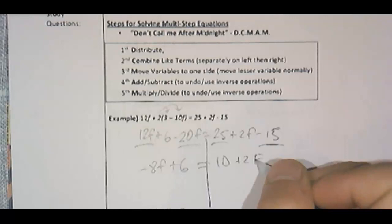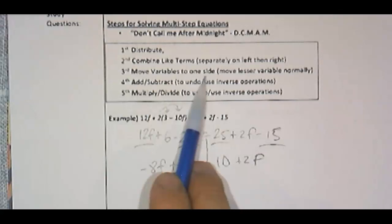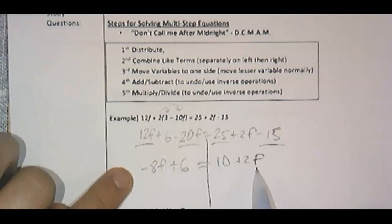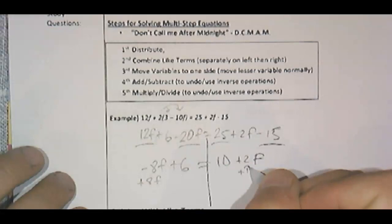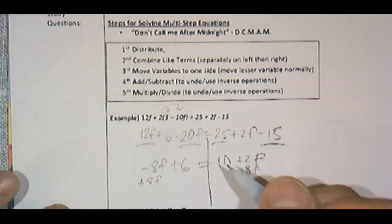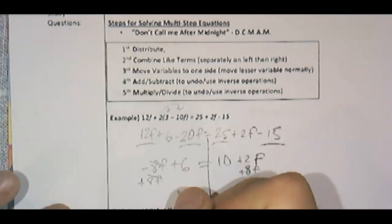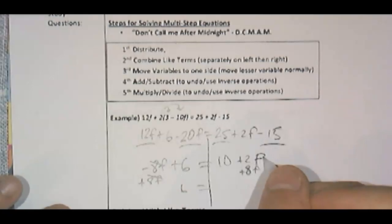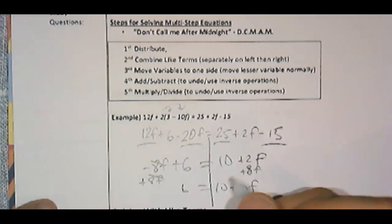And then the next step says, third step, move the variables to one side. Normally move the lesser variables. So negative 8f and 2f. Negative 8 is less than 2. So I'm going to move that by adding it. So you move a variable from one side to the other still by doing the opposite of whatever it is. 8f cancels here. 6 is left there. And then over here, I'll have a 10 plus 2 plus 8 is 10f. So 10 plus 10f.